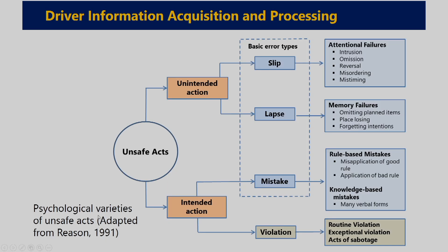According to Reason (1991), unsaved acts leading to error are divided into two main categories: unintended action and intended action. Unintended action can be further categorized into slip and lapse. Intended action can be further categorized into mistake and violation. Out of all these error types, slip, lapse, and mistake are considered the basic error types. Violation is not considered an error because violation is mainly an act of sabotage — exceptional violation and routine violation — which is an intended activity.